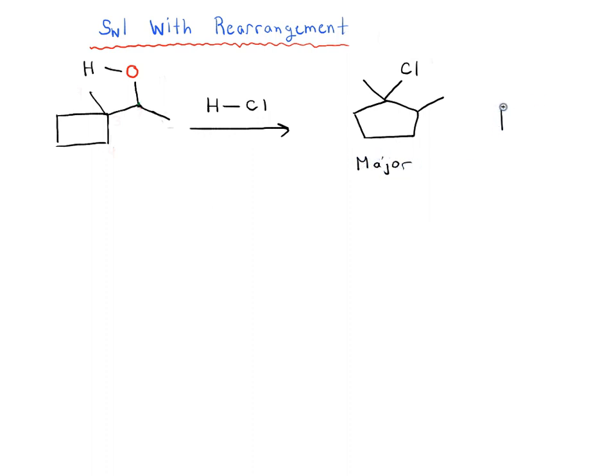And you may or may not also draw out this as a minor product. So you'd have a methyl group here and a chlorine, this would be minor. But this should be your major product. Let's talk about how this happens and the mechanism for how this happens.